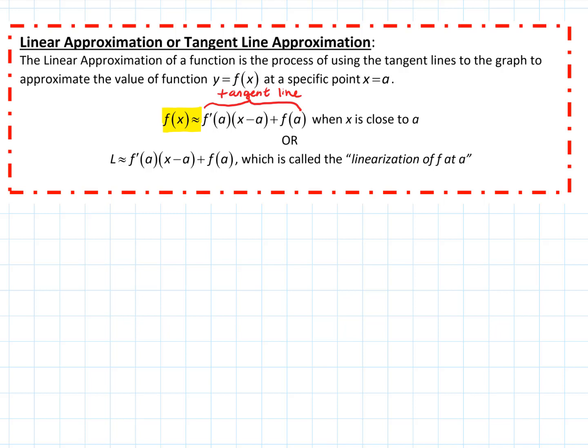What linearization allows us to do — this process of linearizing a function at a point — is it lets us use that linear equation, that tangent line equation, to approximate the function close to the point where we drew or found the tangent line.